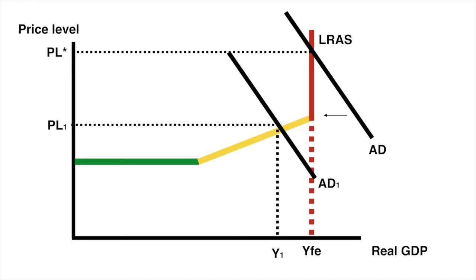The impact of a currency appreciation is demonstrated above. The shift in AD to AD1 represents what would happen if the currency were to strengthen. It is important to remember that the change in the price level and output is linked to where the initial aggregate demand curve is plotted against LRAS. The impact of the change will depend upon the magnitude of the appreciation, the elasticity of exports and imports, and will also depend upon where the economy was operating with regards to full employment prior to the appreciation.